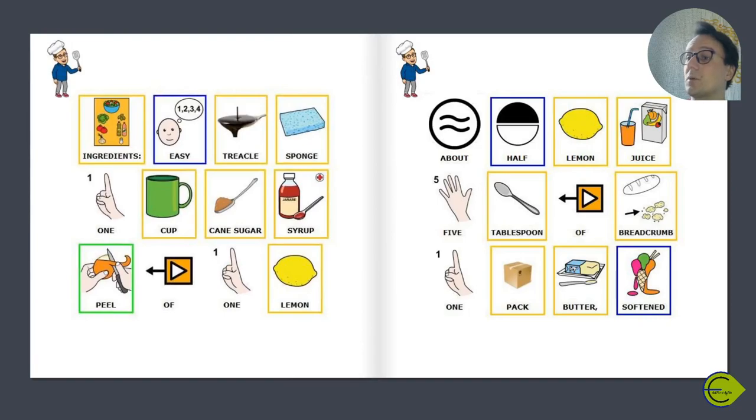Ingredients: 1 cup cane sugar syrup, peel of 1 lemon, about half lemon juice, 5 tablespoons of bread crumb, 1 pack butter softened.